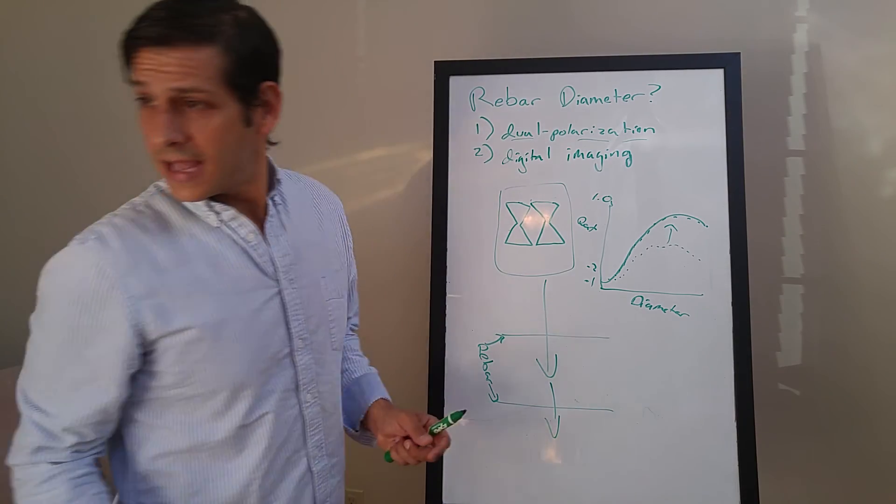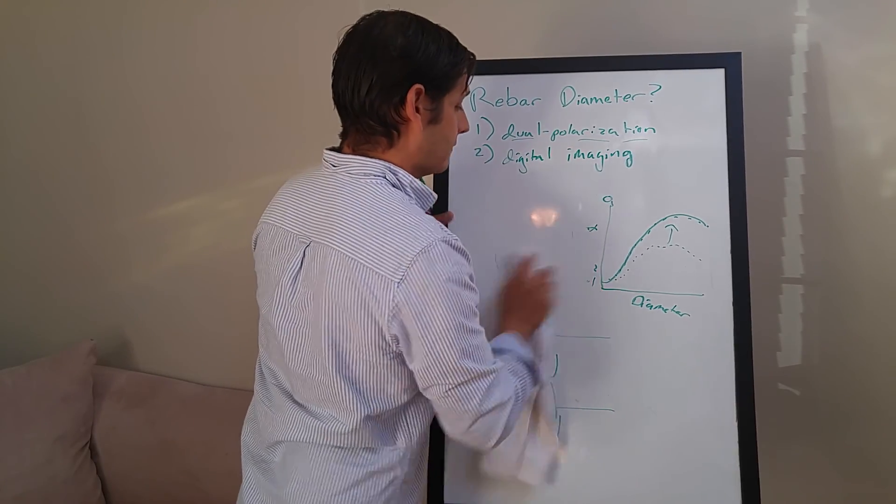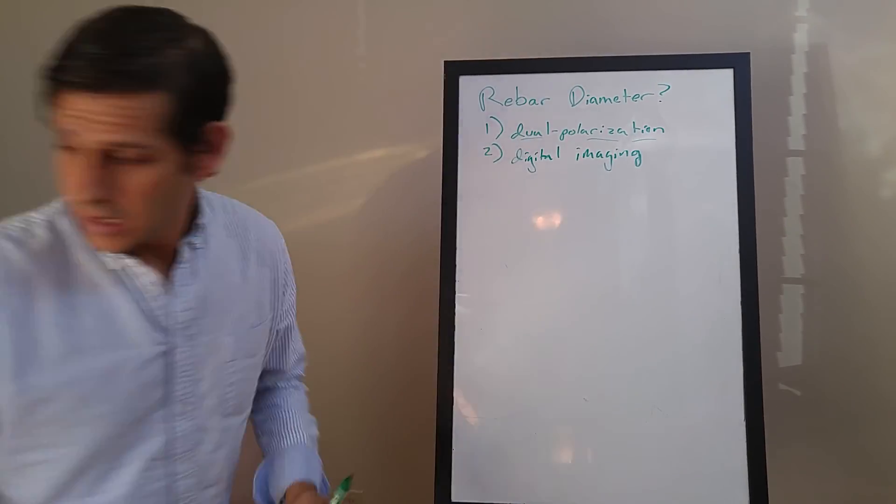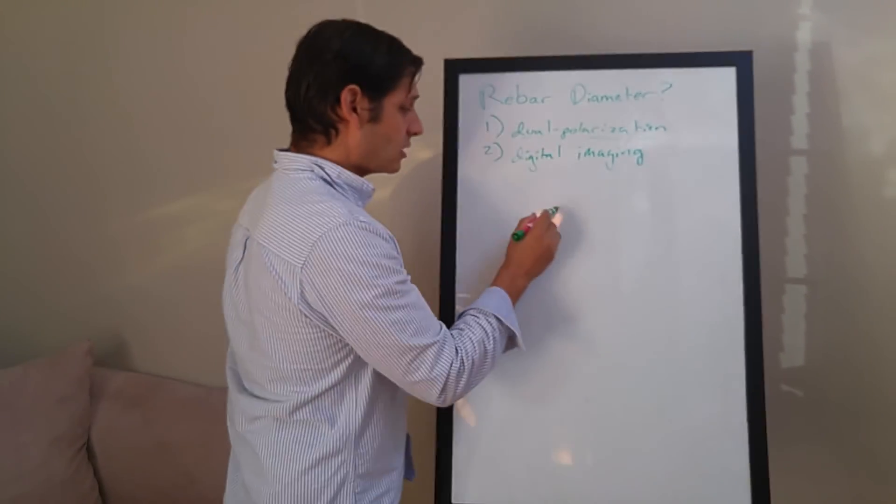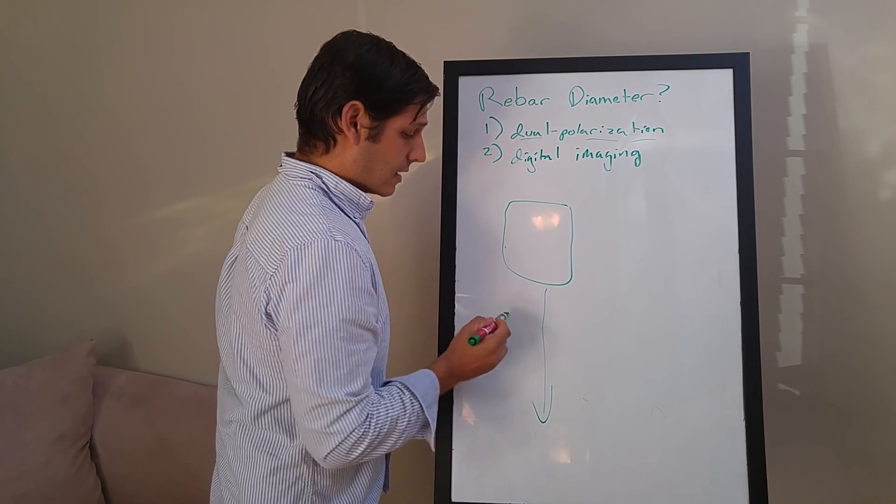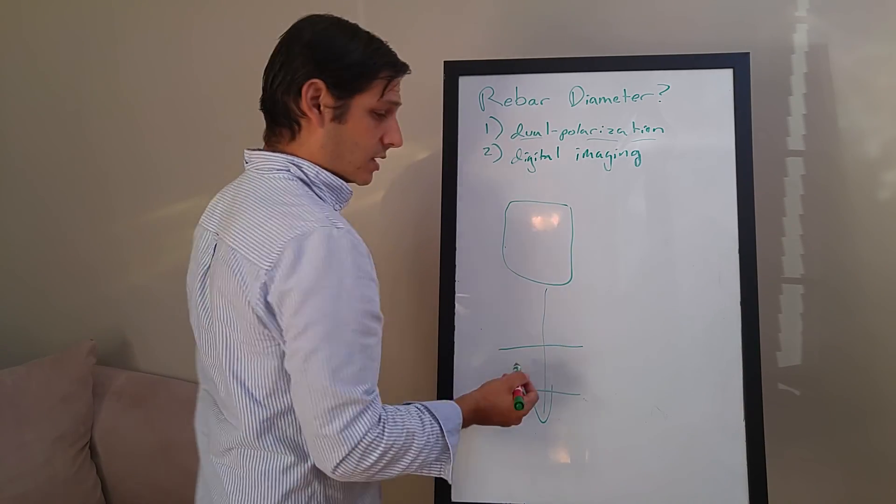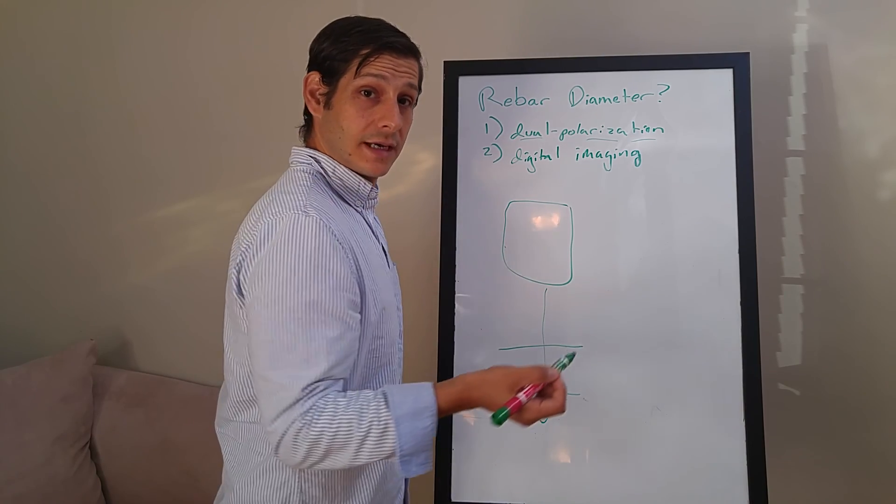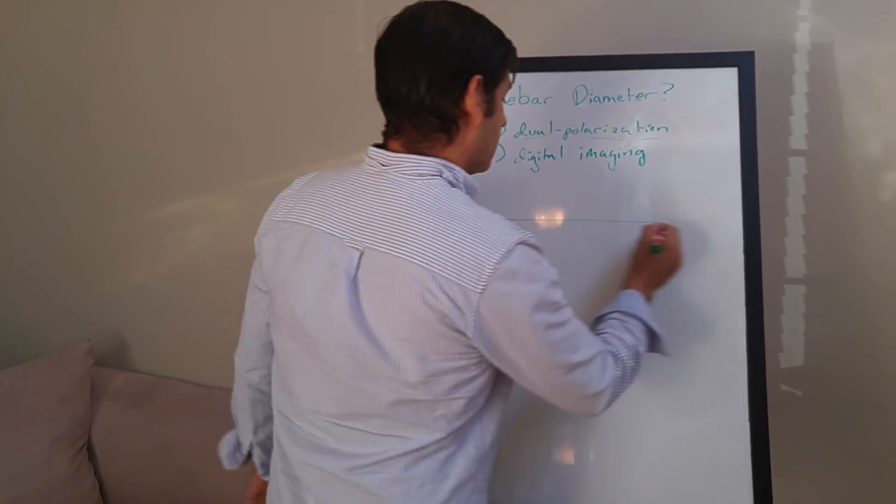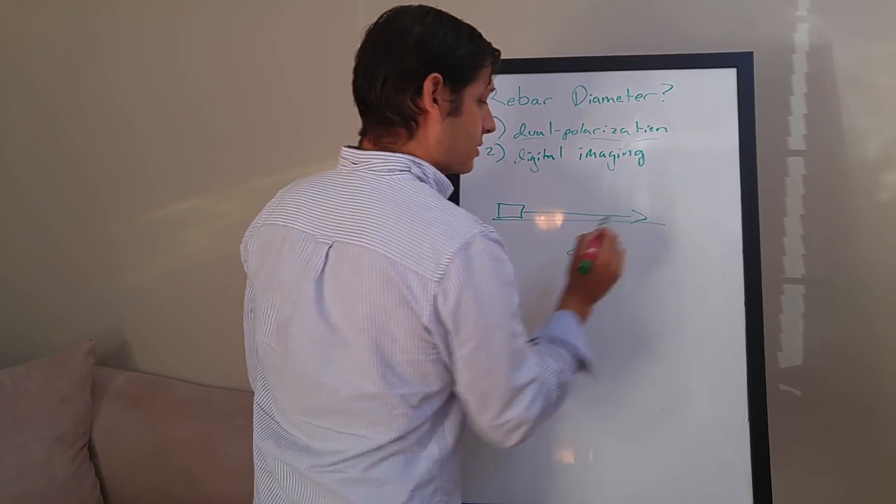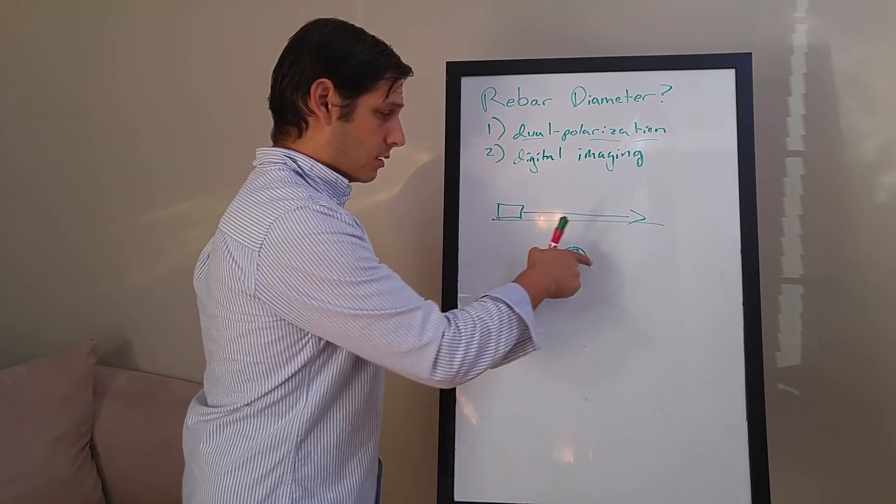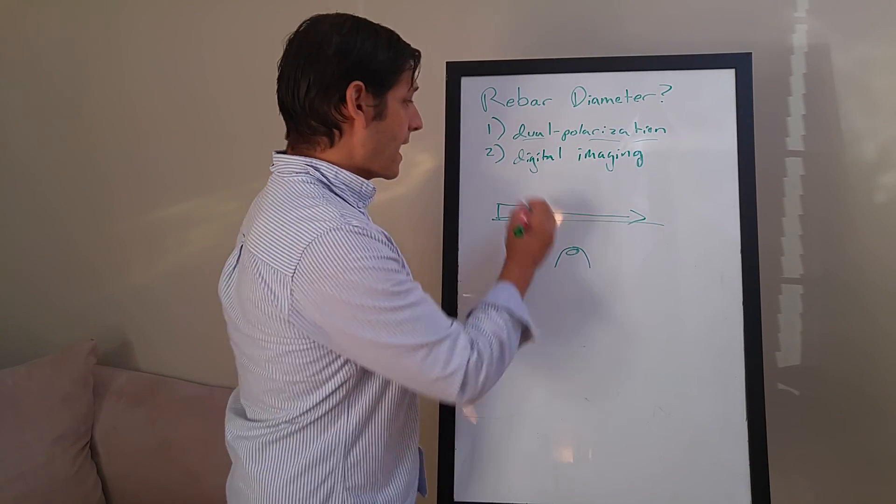So that's dual polarization method. We'll show you the digital imaging method. The digital imaging method basically works like this: you have your antenna and it's going across rebar. As it crosses over the rebar, it's going to give you a hyperbola. Here's your rebar, there's your antenna, it's coming across this way. As it hits, you're going to end up getting a hyperbolic reflection event.